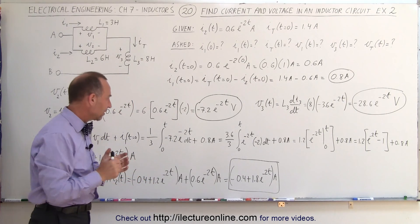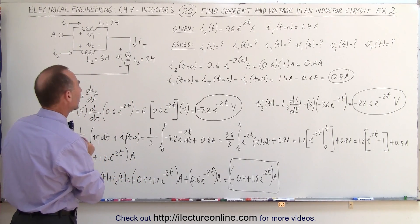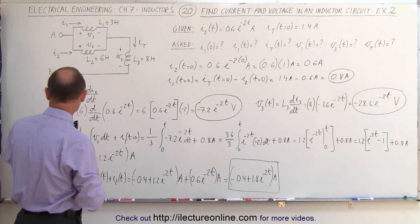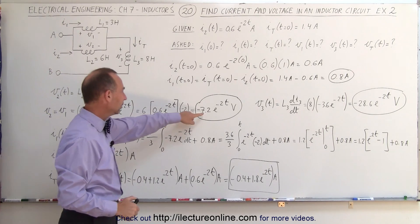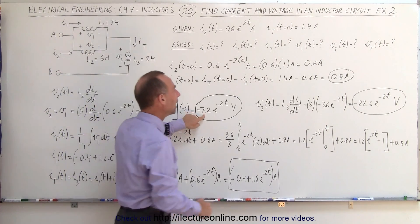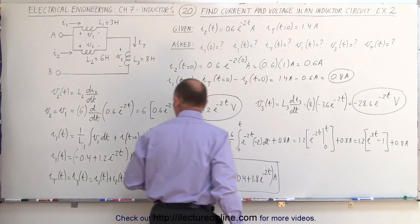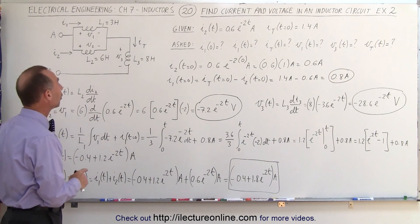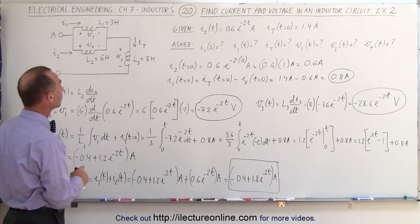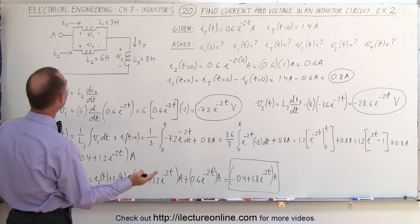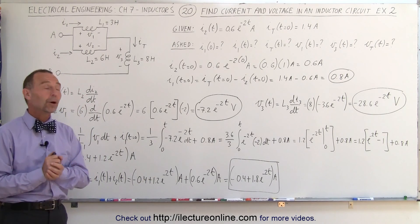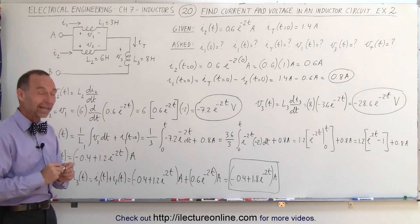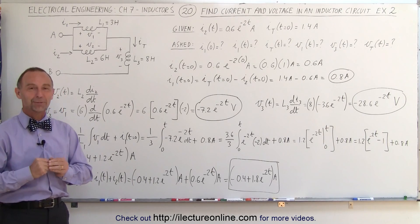So do we have everything now? Let's check. We have V₁ and V₂, which are equal. We have V₃, we have I₁, I₂, and I_total. It looks like we have everything we want to know about the problem. And that's how we do that.